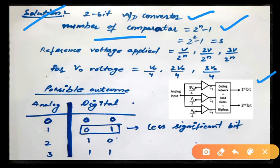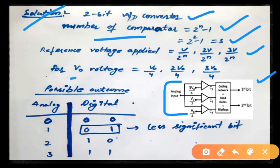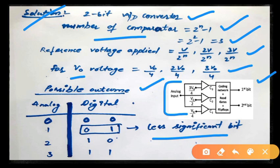For n = 2 bits: 2² − 1 = 3 comparators, which matches. The reference voltages are V/2^n, 2V/2^n, and 3V/2^n; for V0 and n = 2 these are V0/4, V0/2, and 3V0/4, as confirmed in the figure. The possible 2-bit outputs are 00, 01, 10, and 11. Among these four outputs, 01 corresponds to the least significant bit output we need to find the expression for.